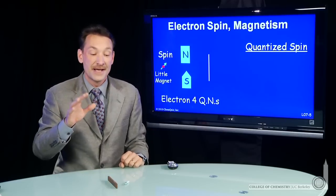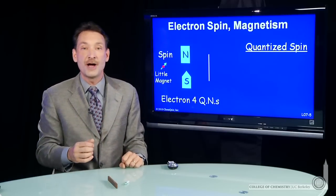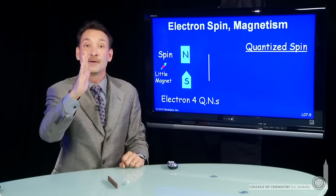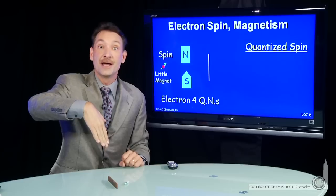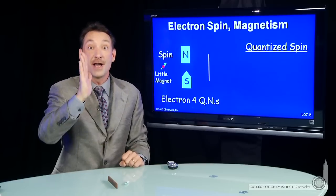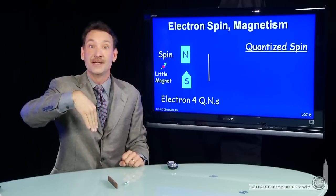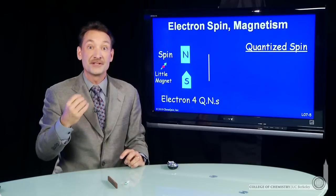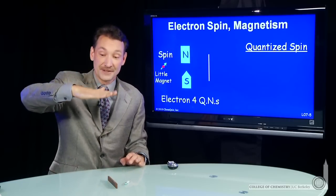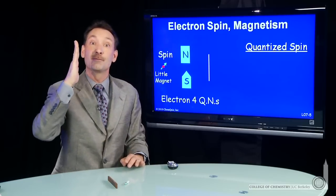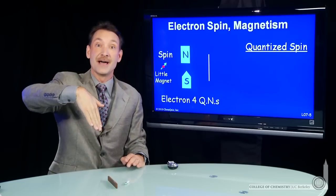For electrons, that direction in the magnetic field is quantized. It can only be spin up with the magnetic field or spin down against the magnetic field. Quantized energy levels, two of them. And we're used to quantization now for tiny particles. So we understand the electron magnetic field can't point in any direction. It can point spin up or spin down.